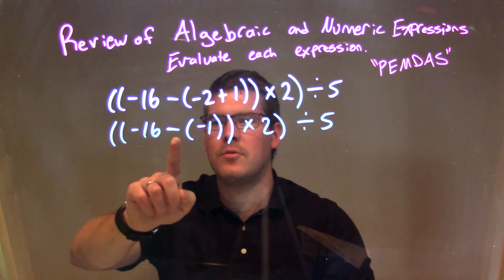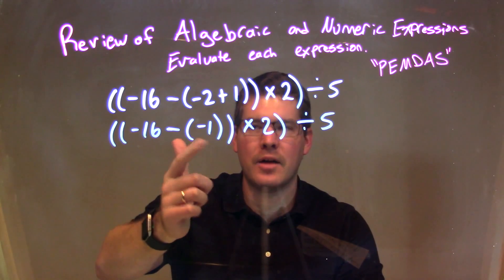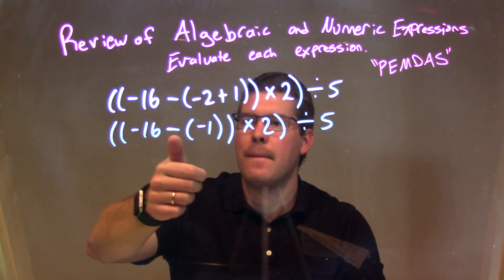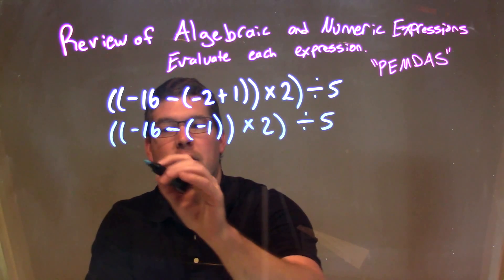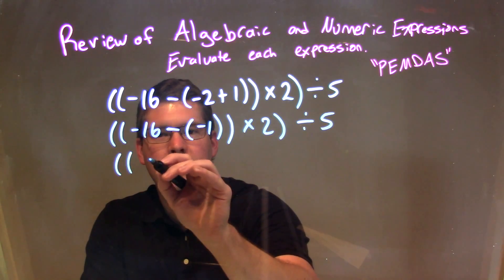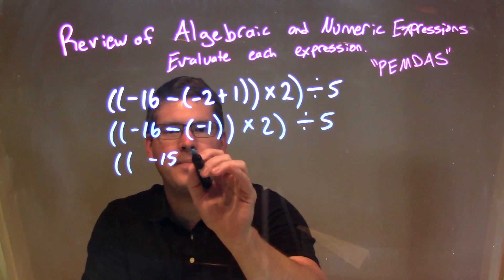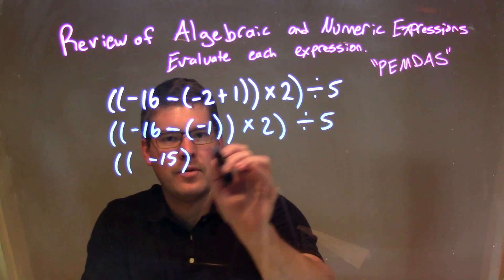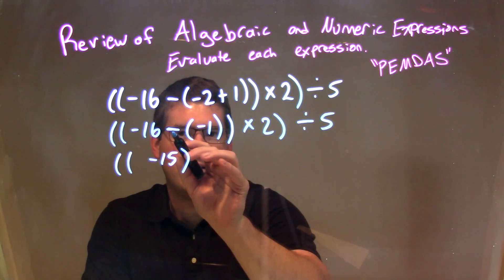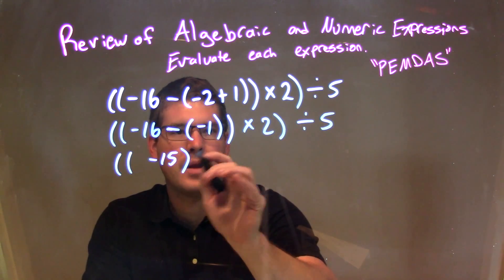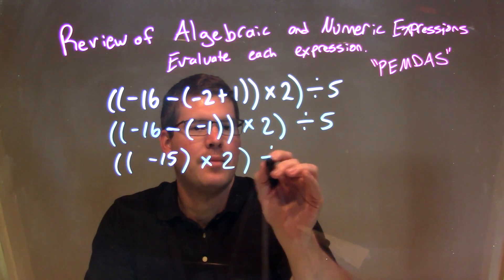Now we deal with the next part. We have subtracting a negative. Subtracting a negative is the same thing as adding a positive. So negative 16 minus a negative 1 is adding a positive 1. So negative 16 plus 1 is negative 15. Double parentheses, negative 15 now — these two parentheses are eliminated because we got rid of that negative 1, or adding a positive 1. Then times 2 comes down, and then divided by 5.